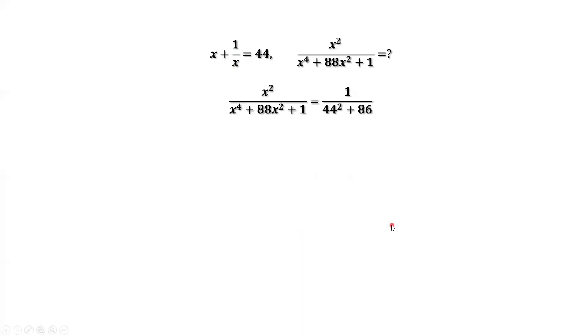Simplify. We have 1 over 1936 plus 86 equals 1 over 2022. 1 over 2022 is the answer. That's all. Thanks for watching, and see you next time.